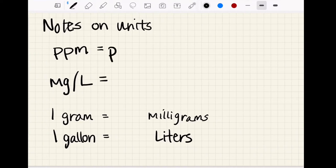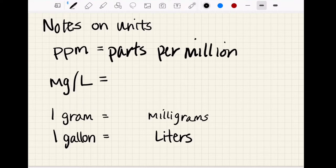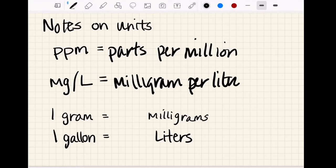A couple notes about units: ppm is parts per million, and we hear that often when we're talking about wine, especially sulfur dioxide. But you also may see it in milligrams per liter, and the important thing to know or remember is that one ppm is equal to one milligram per liter, so those are interchangeable units. We're going to use milligrams per liter in our equation example because then we can cross out our units and make it nice and neat.